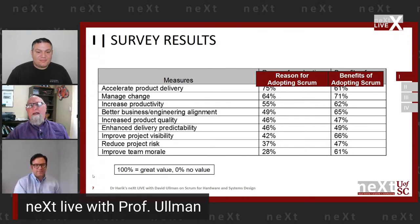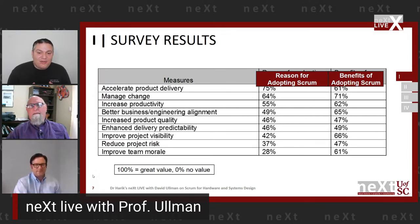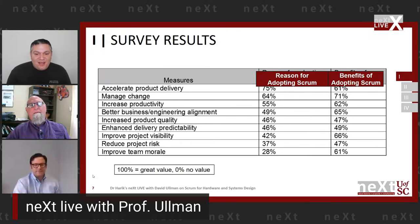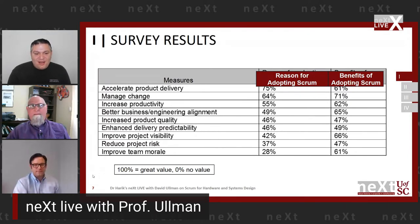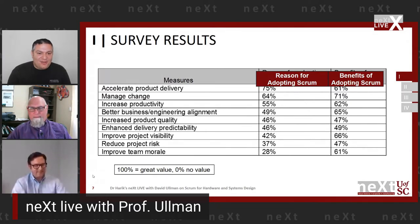What I like about this chart is the difference between the expected reasons and actual benefits. There is some agreement — plus or minus 10% between both — but one jumps massively: team morale, from 38% to 61%. Josh, because you've implemented Scrum, can you comment a little on that? Before you do, we have a ton of people watching live — if you have any questions, please put them in the chat box and we'll make sure to answer them.